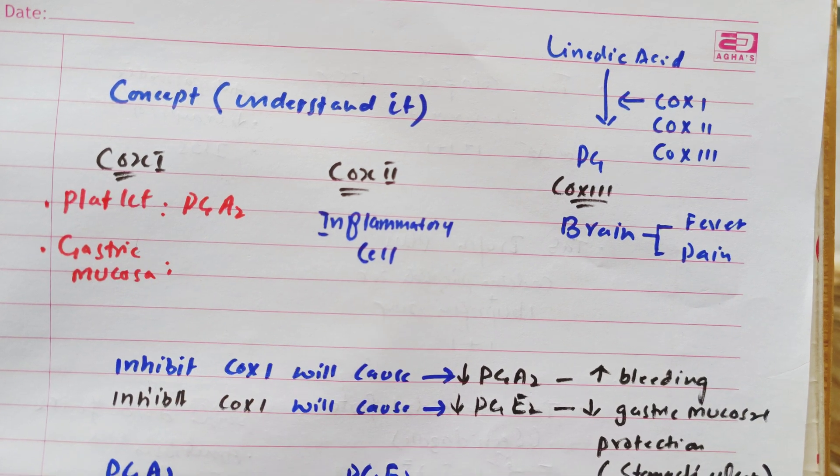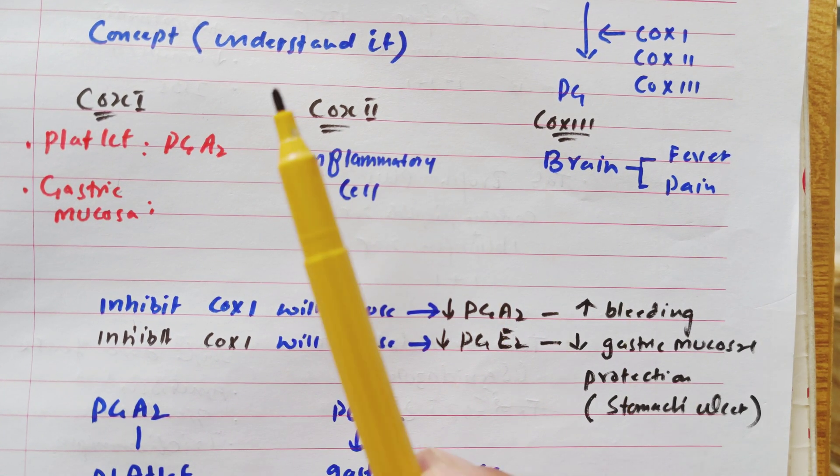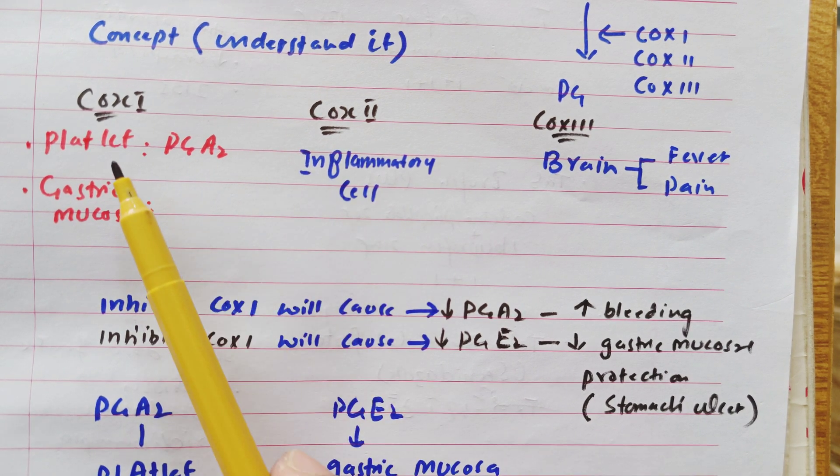Now here it is very important to understand the selective COX-2 inhibitor because we will not affect the function of platelet and gastric mucosa.